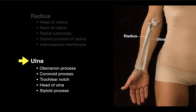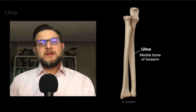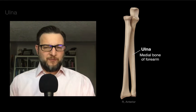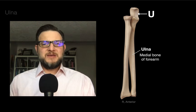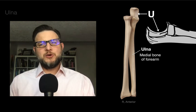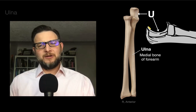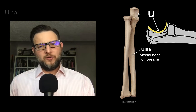Now let's go to the ulna. The ulna is the medial bone of the forearm. I like to identify the ulna because the proximal part looks like a U — and if you look laterally, it's a U for ulna.